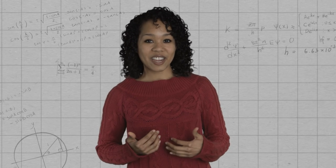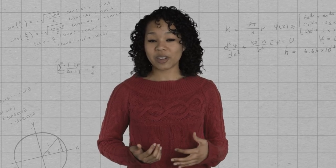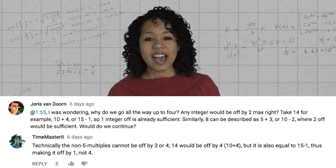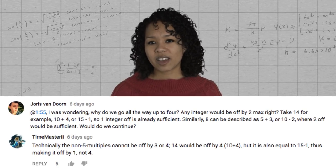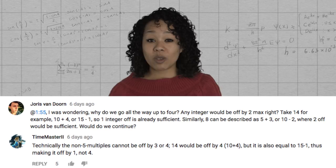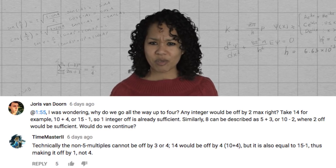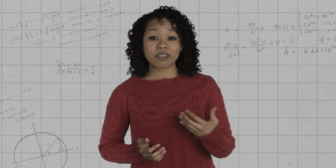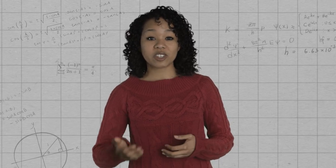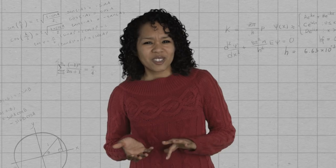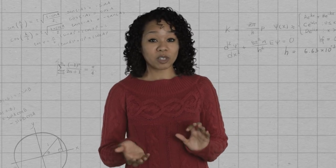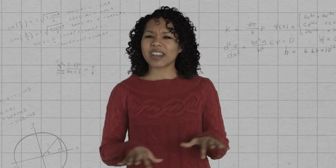Hey, everyone. Tai-Danae here responding to comments from the episode How to Divide by Zero. Some of you, like Yoris and Time Master 2, asked about the remainders mod 5. Shouldn't the only remainders be 1 or 2 and never 3 or 4? To use their example, 14 is off by 4 because its remainder after dividing by 5 is 4. But you might also say it's off by 1 because 14 is 15, a multiple of 5, minus 1. Great question.